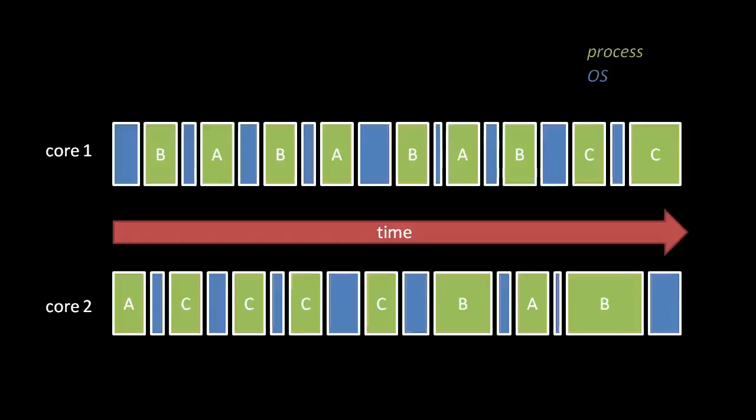If we have two CPU cores and three open processes A, B, and C, notice that each process only runs on one core at a time — at no point does process B run simultaneously on both of the two cores. Also notice that OS code always runs on each core in between each process.